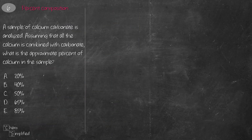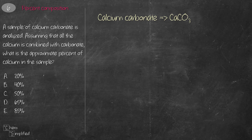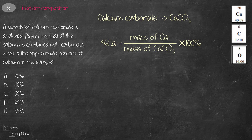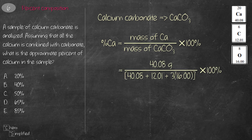This is a percent composition question — specifically finding the percent of calcium in calcium carbonate, CaCO3. We get atomic masses for Ca, C, and O from the periodic table. The formula is: mass of the atom divided by the molar mass of the entire compound times 100%. The mass of Ca is 40.08 and the total molar mass of CaCO3 is approximately 100, giving us 40/100 × 100% = 40%. The answer is B.